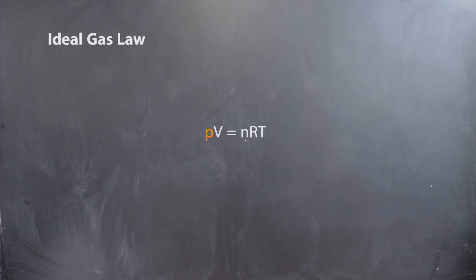P refers to the pressure of the gas, V is the volume, N is the number of moles of gas, and T is the temperature in Kelvin.